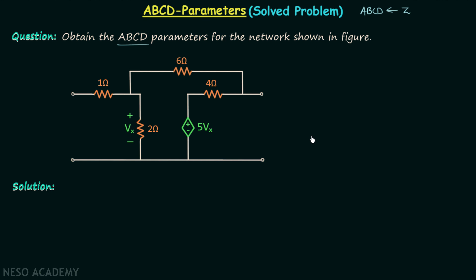Now let us understand the solution of this problem. We will first find the set of equations in case of Z parameters. Step number one is to assign the currents in all the branches of our two-port network. This is port number one, the input port; the voltage between the two terminals will be V1 and current I1 will enter the two-port network. This is port number two, the output port; the potential difference between these two terminals is V2, and according to convention, current I2 will enter the two-port network.